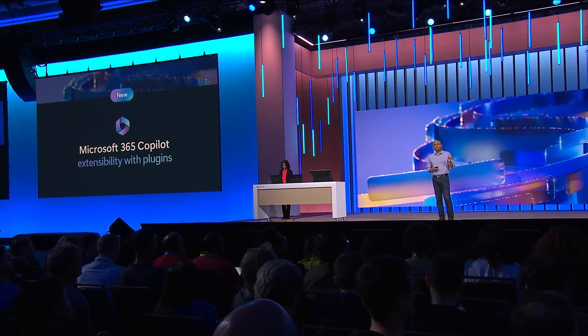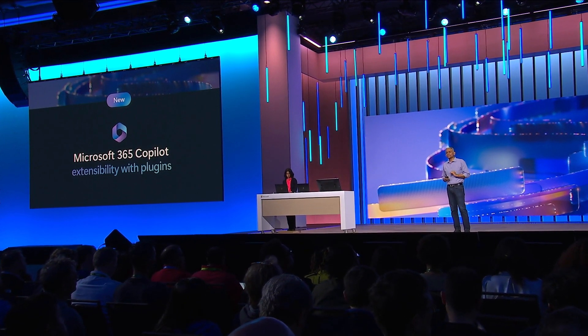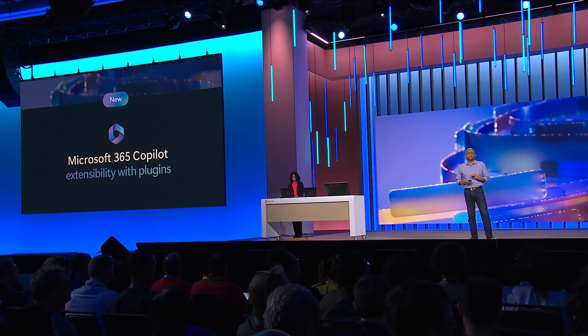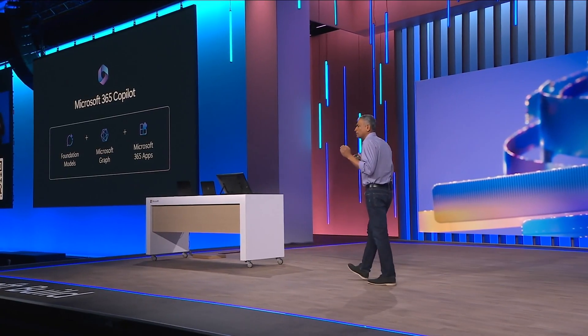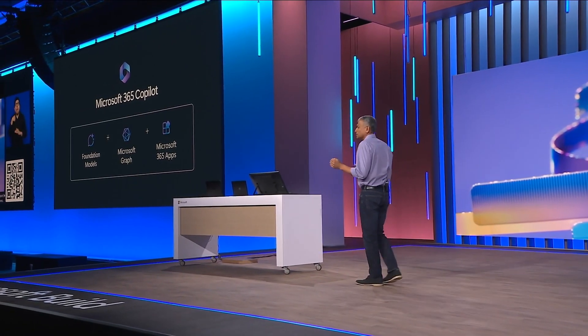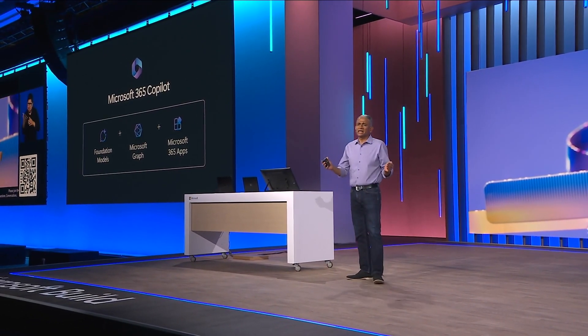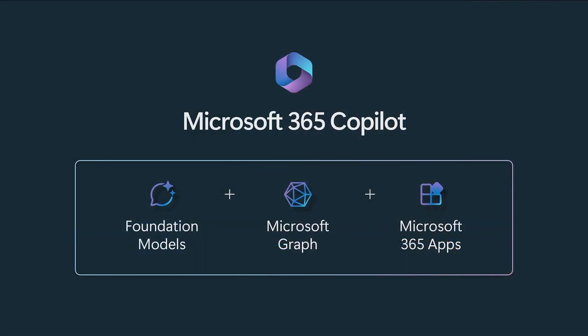Copilot is able to get your information and data, and you get to control the user experience. It can act on the user's behalf using some of the most powerful models out of Azure, with full safety delivered by the Azure cloud, all grounded in the user's context — who they work with, what they work on, their meetings, conversations, and documents.